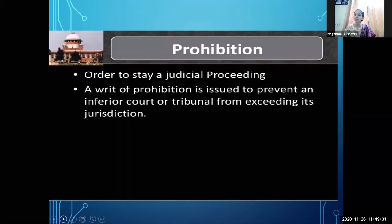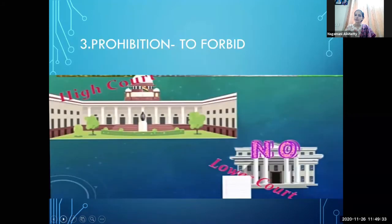The higher court issues an order of Prohibition saying 'no' to the lower court — stop all proceedings. If something is illegal, the court orders the lower court to stop. This is a stay order. Prohibition means to forbid, to stop whatever proceedings or decisions are being made — that is called Prohibition.